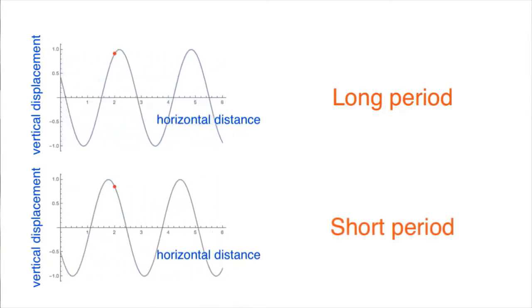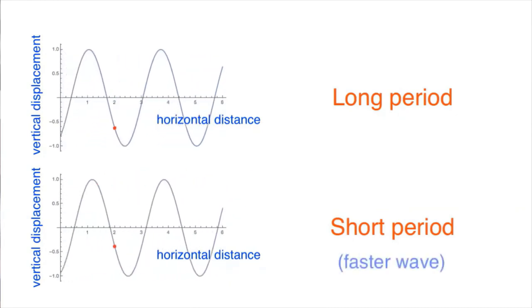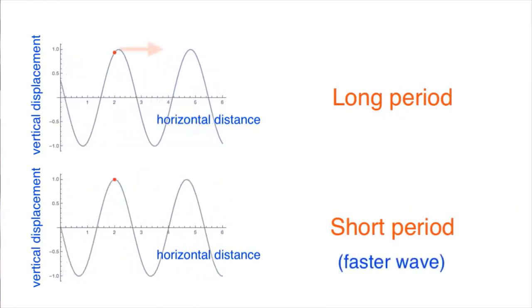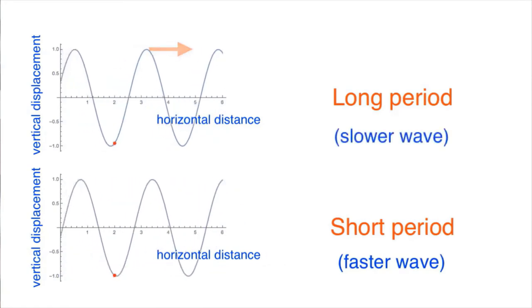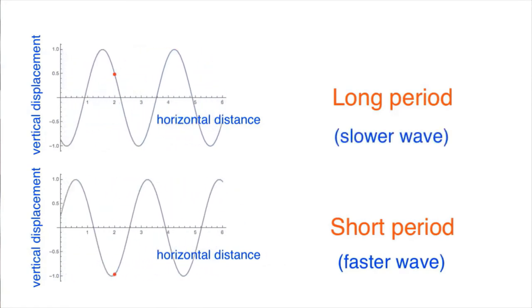The wave with a shorter period appears to travel more quickly. A wave with a longer period moves more slowly. We often denote period with a capital T.